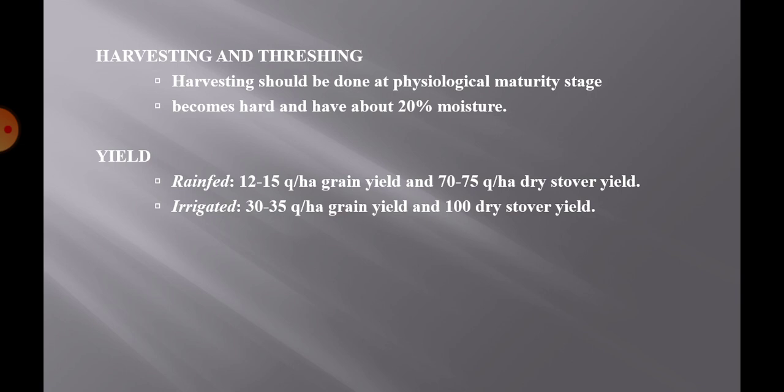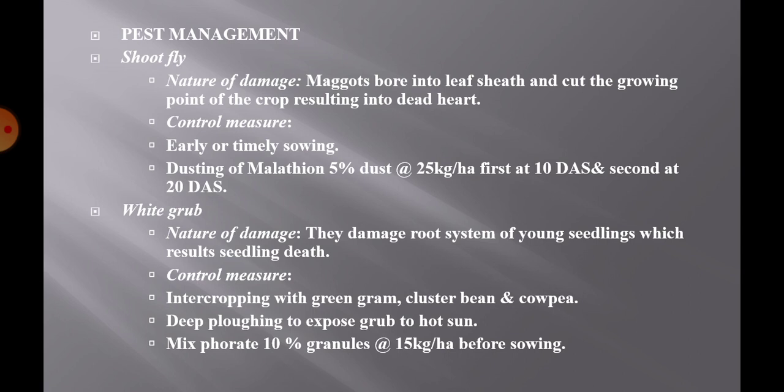Shoot fly is one of the major pests. It bores into the leaf sheath and cuts the growing point of the crop, resulting in a dead heart. To control shoot fly, early and timely sowing should be followed, and dust malathion 5% at the rate of 25 kg per hectare — first at 10 days after sowing and second at 20 days after sowing.